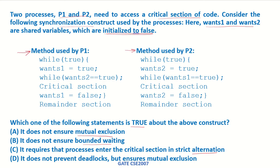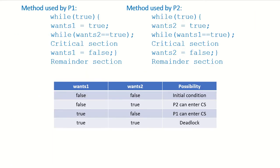Let's look at the methods being used by P1 and P2. We have been given that the two variables wants1 and wants2 are initially set to false. Let's consider the case where P1 is executing and P2 is not executing currently.